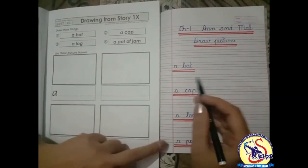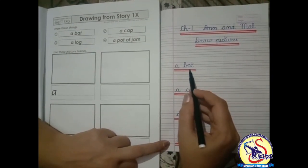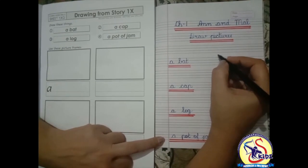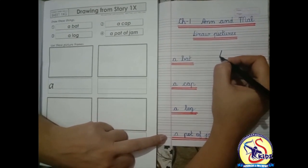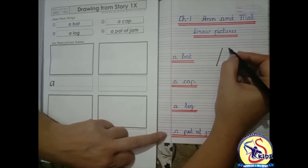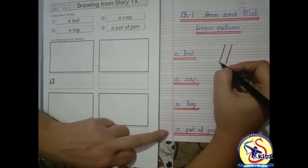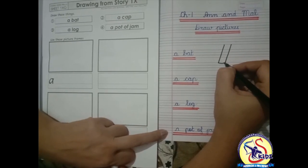A bat. Firstly, we will draw the picture of a bat. Draw a slanting line, one more slanting line, join...